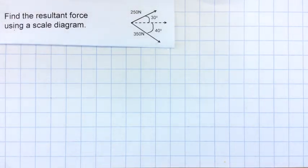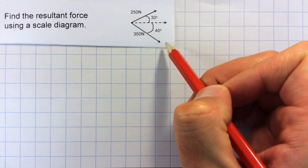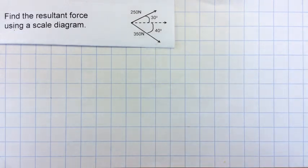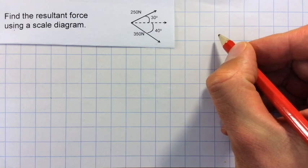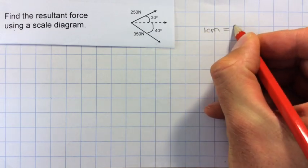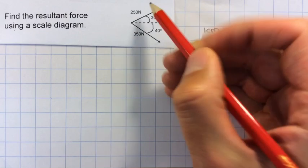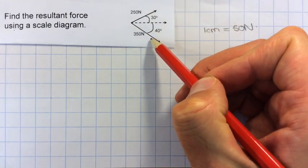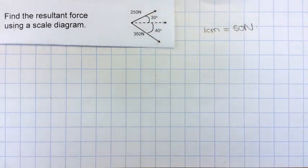In this video I'm going to find the resultant force from these two forces using the parallelogram method. The first job is to come up with a scale, and I'm going to use 1 cm is 50 N, which will make this 5 cm and this 7 cm, which seems like a reasonable length.